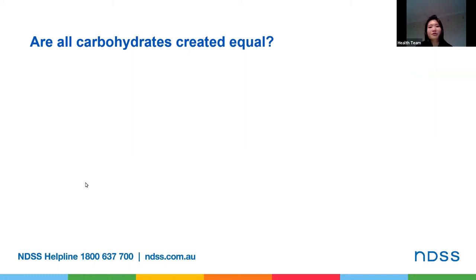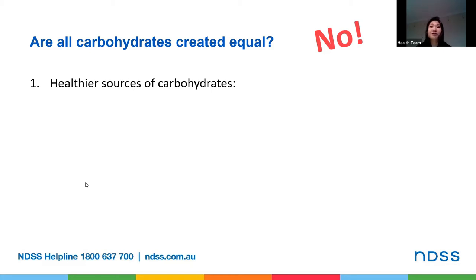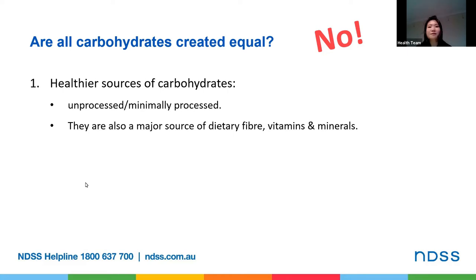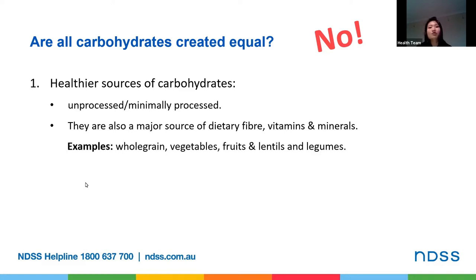We hear a lot about carbohydrates and there are many mixed messages out there. Although we know they are important for our body to function properly, not all carbohydrates are actually created equal. Many believe carbohydrates in general are bad, but it is the quality of the carbohydrate that is important to consider, where some types of carbohydrate-rich foods are actually better than others. We can view carbohydrates in two categories: the healthier sources, which are either unprocessed or minimally processed. They are also a major source of dietary fibre, which slows down the rate of glucose getting into your blood. These foods include your whole grains, vegetables, fruits, lentils, and legumes.